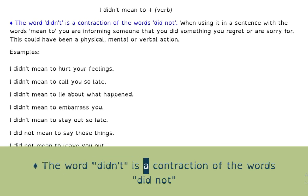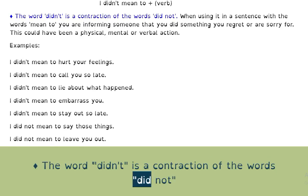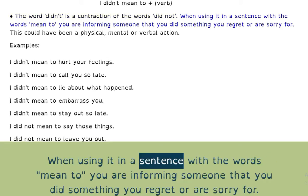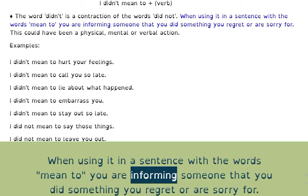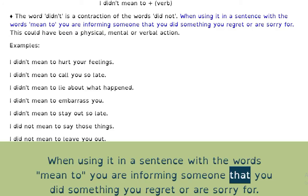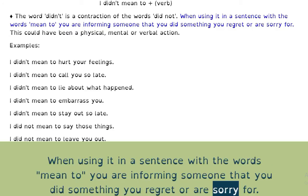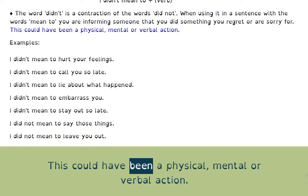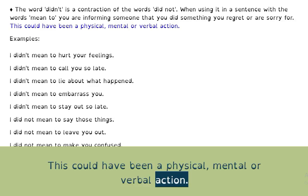Didn't is a contraction of the words did not. When using it in a sentence with the words mean to, you are informing someone that you did something you regret or are sorry for. This could have been a physical, mental or verbal action.